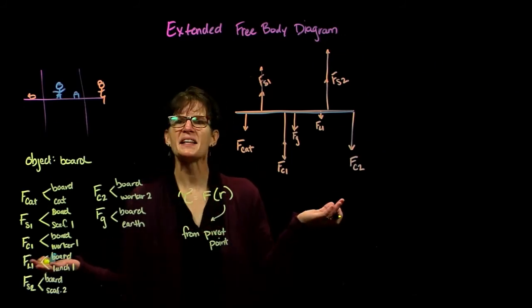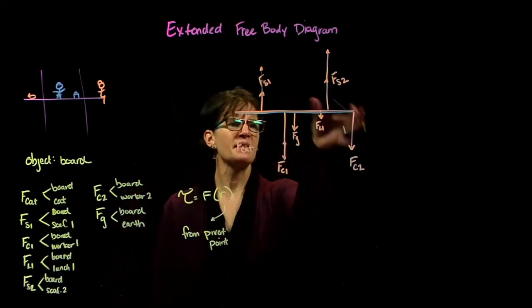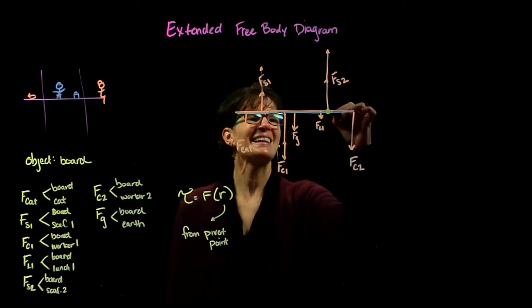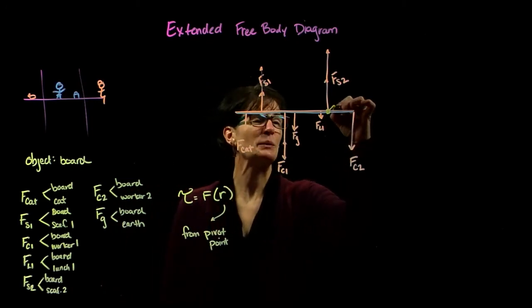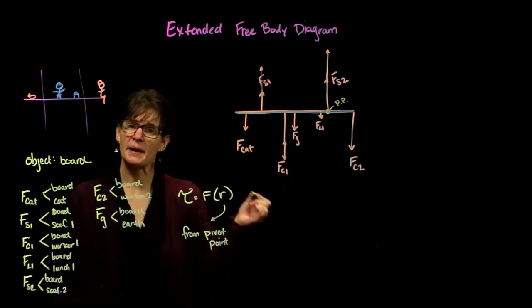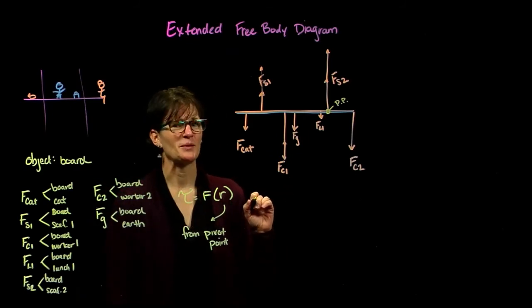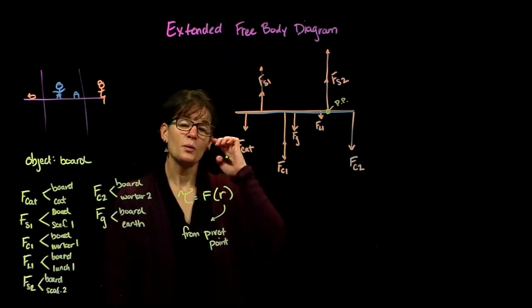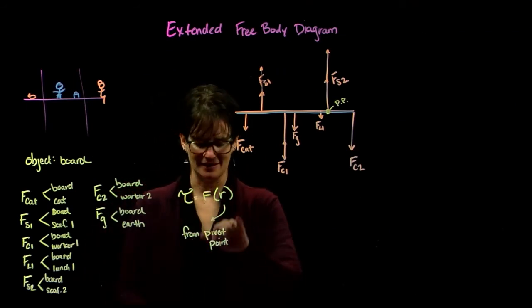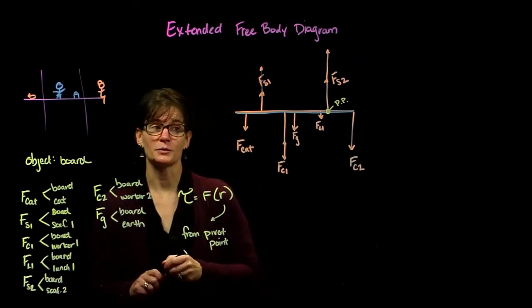That might make some sense. If I were to add another construction worker, let's say, on the end, maybe the object would rotate about this pivot point. Again, it does not really matter. It's kind of like setting the origin, where you set that pivot point, but we will get strategic with it as we move through our analysis. So the reason I want to put a pivot point on there is we now need to identify radii and what that means, so that when we do the torque analysis, we can use the proper values for that radii.